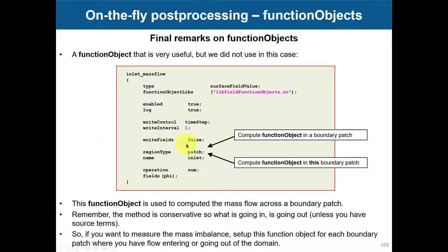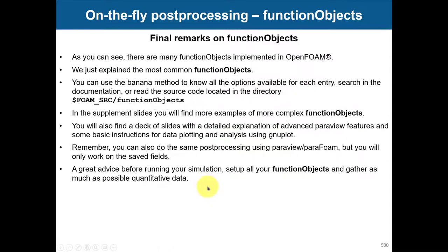A particular function object I didn't show in this case, but we saw in the cylinder tutorial in module one, is to compute mass flow. Remember that the method is conservative — what goes in goes out. You can put one function object at the inlet and one at the outlet. So you can have multiple function objects or monitors.